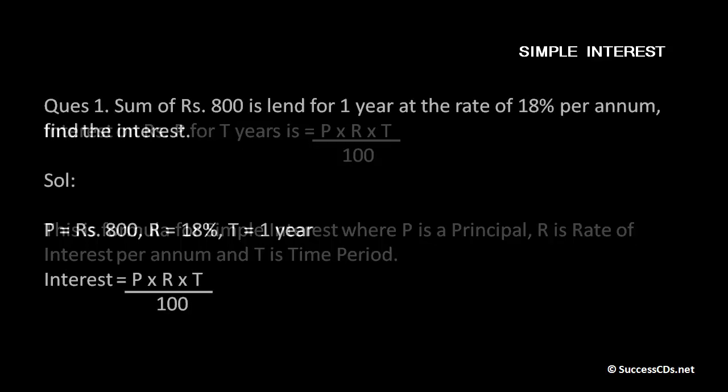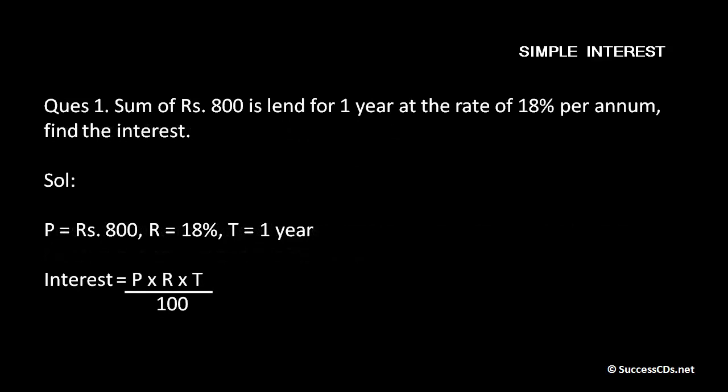Now, let's see some examples and try to understand the topic more clearly. Sum of rupees 800 is lent for one year at the rate of 18% per annum. Find the interest. Now let's check out the solution.